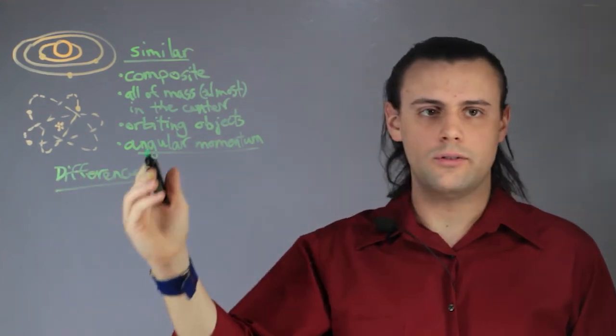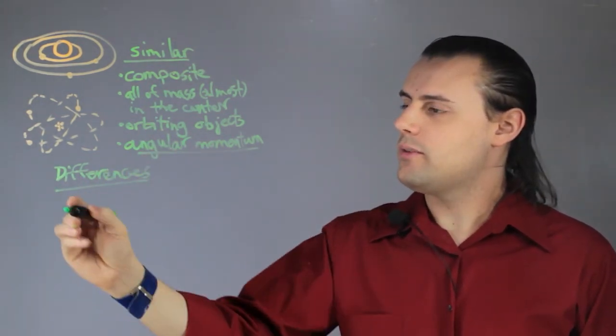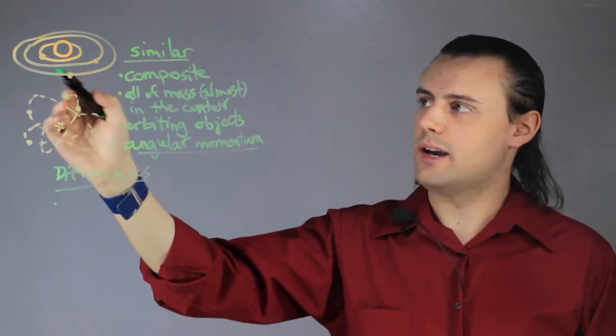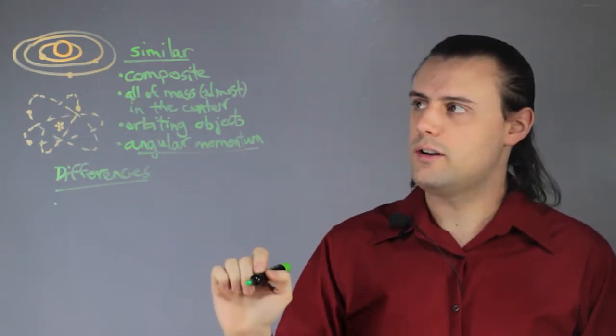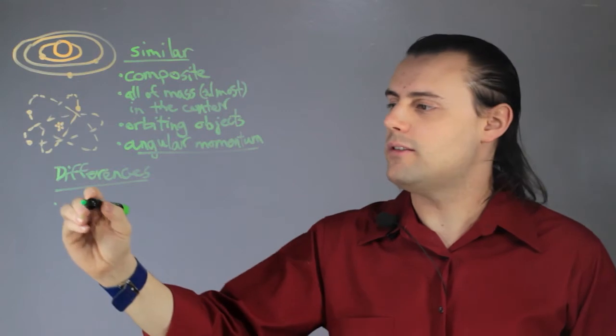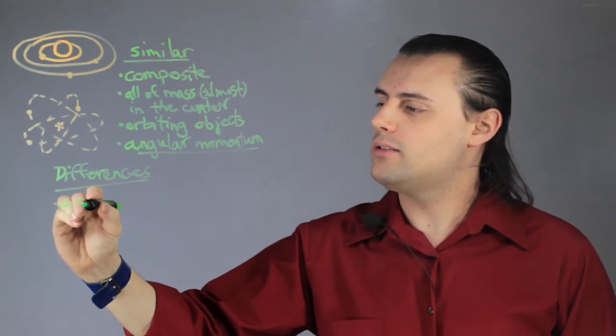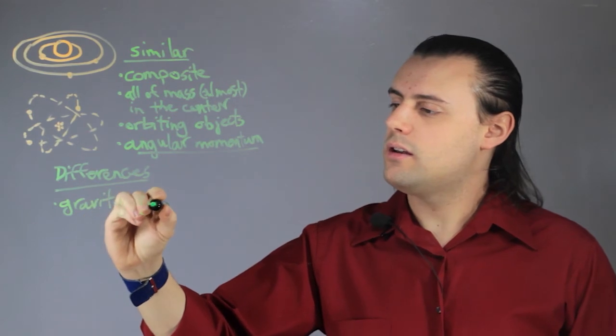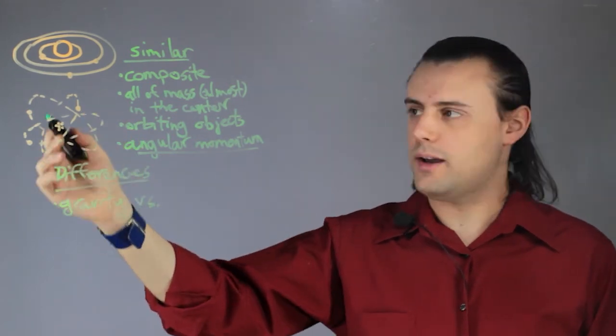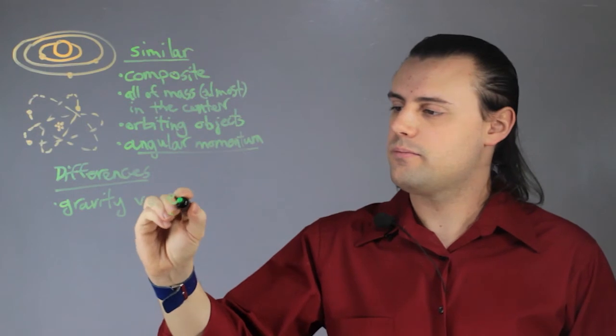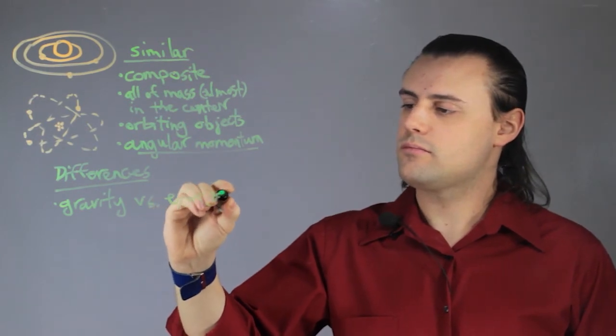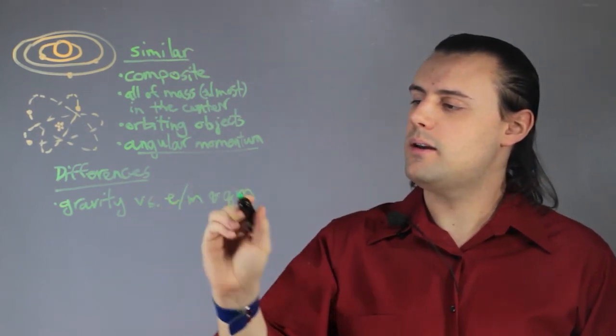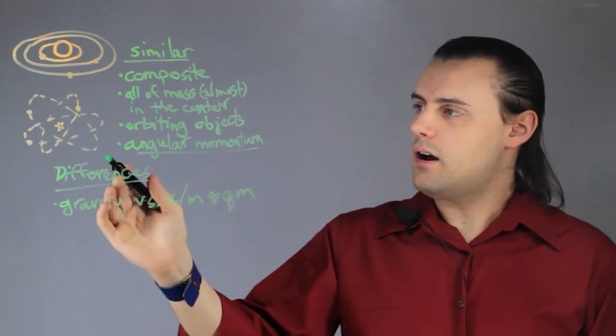One difference is that a solar system's dynamics are governed and dominated by gravitation, whereas the dynamics of an atom is dominated by electromagnetic forces and quantum mechanics, EM and QM.